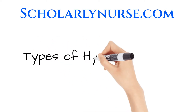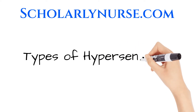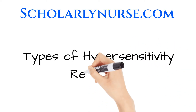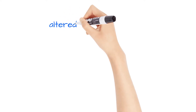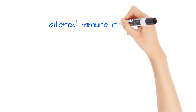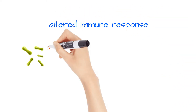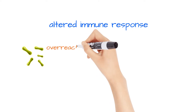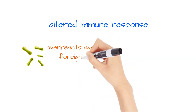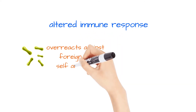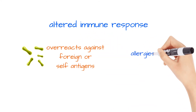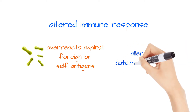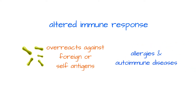Hello and welcome to the video on types of hypersensitivity reactions. A hypersensitivity reaction is an altered immune response in which our immune system overreacts against either a foreign antigen or our own self-antigens. Allergies and autoimmune conditions are considered hypersensitivity reactions.